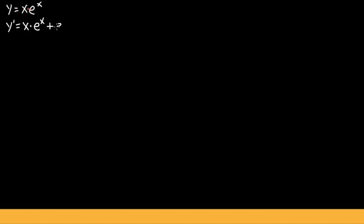So let's go ahead and do the first one, y prime. The product rule says we are going to keep the first function, which is x, and then multiply by the derivative of the second. The derivative of e to the x is just e to the x. And then we add the second function, which is e to the x, and then multiply by the derivative of the first. The derivative of x is just one.